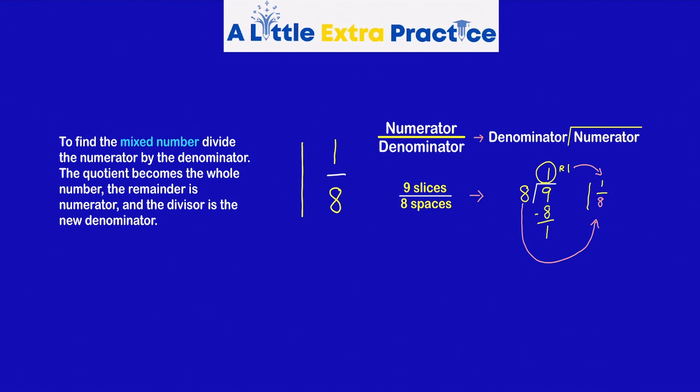So recapping what we did: define the mixed number. Divide the numerator by the denominator, the top number by the bottom number. The quotient becomes the whole number. The remainder is the new numerator, and the divisor slides over and becomes the denominator.